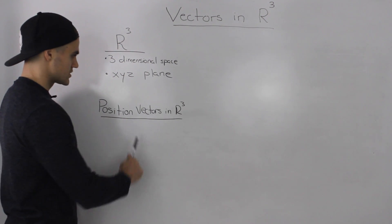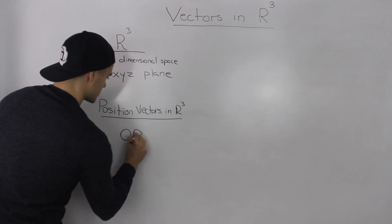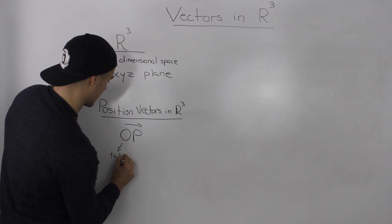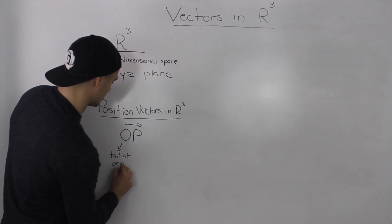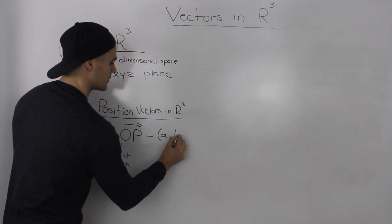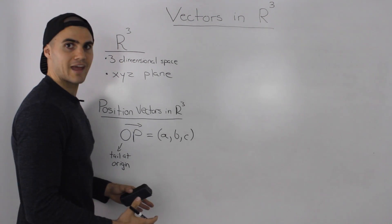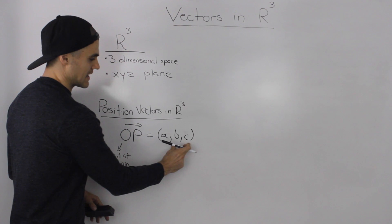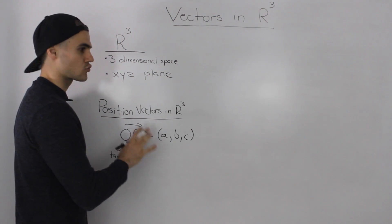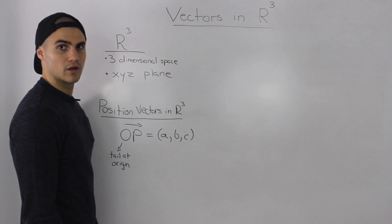It's going to be 3D. Position vectors in R cubed are represented similarly as in R squared. We have this OP here, where the zero represents the tail of the vector at the origin. However, this coordinate P is now going to have three parts: an x, y, and z part. So we can't just deal with an xy plane now because we have this extra z. The real challenge in this section is going to be the drawing part — at least for me, as I'm not too much of an artsy type, but we'll do our best.